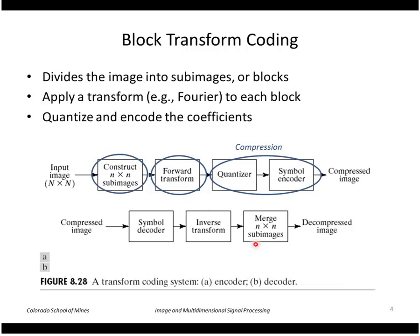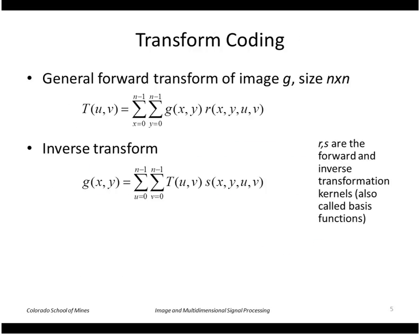In general, to apply a transform we take our n by n image, let's call it g, and do a sum of products with a basis function, a forward basis function called r.